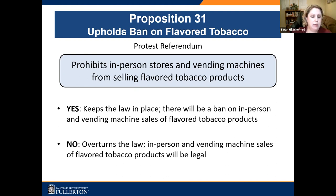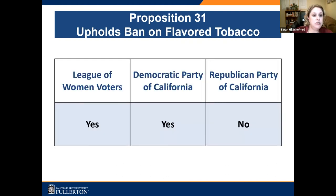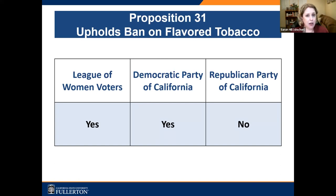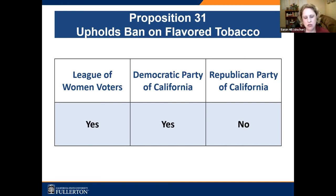This can get confusing: a yes vote would keep the law in place — there will be a ban on in-person and vending machine sales of flavored tobacco products. A no vote would overturn the law and allow those products to be sold. The League of Women Voters and the Democratic Party say yes, believing this is important for stopping teenage smoking. The Republican Party says no — their concern is teenagers aren't supposed to have tobacco and are already regulated; don't prevent adults who want flavored products from having access.